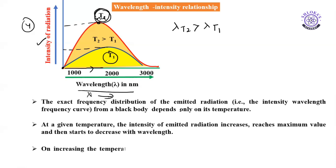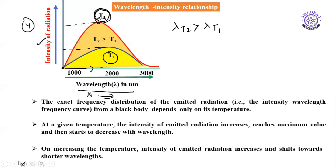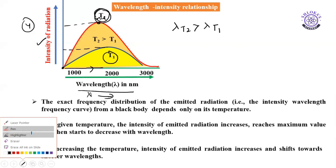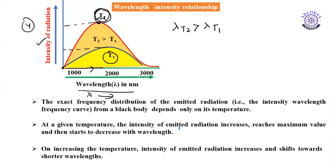The exact frequency distribution — the intensity vs. wavelength and frequency curve — shows that at a given temperature the intensity of emitted radiation increases, reaches a maximum value, and then decreases with wavelength. On increasing the temperature, the intensity of the emitted radiation increases and it shifts towards a shorter wavelength.